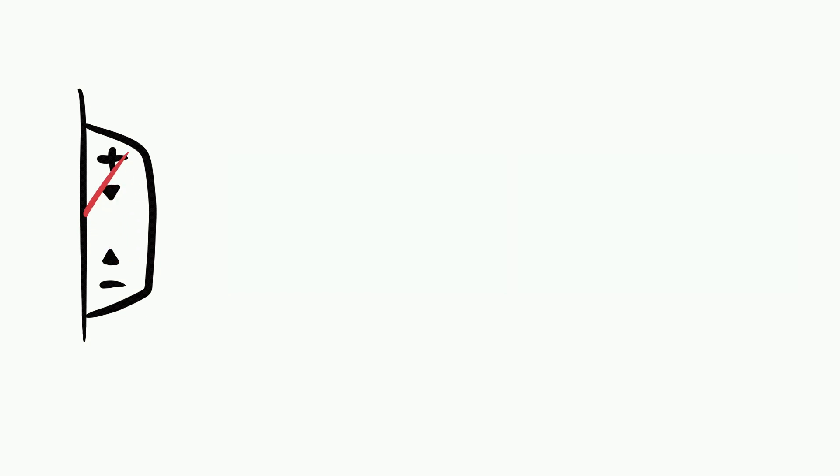Now, if your light meter tells you your photo is going to be properly exposed, great, go ahead and take your photo. But if it's going to be underexposed or overexposed, you need to change your settings first based on what your light meter tells you. The good news is, you probably already have a light meter built into your camera. If you look through the viewfinder, you might see something like this. And that needle at the minus sign is warning you that your photo is going to be underexposed. At the plus sign, it's a warning it'll be overexposed. You want the needle right in the middle.